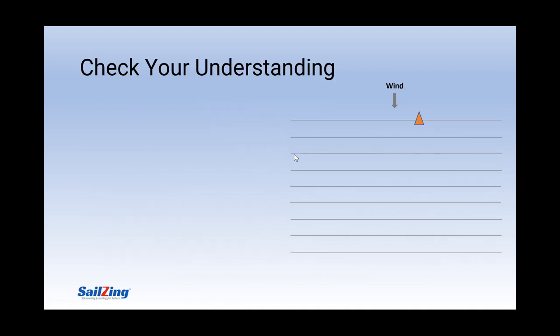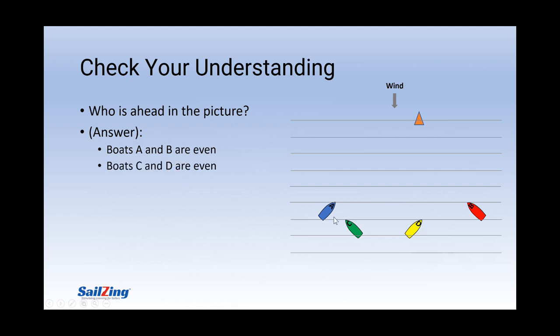Now let's check your understanding. Who's ahead in this picture? Using the ladder rungs, we can easily see that boats A and B are even with each other, since they are on the same ladder rung. C and D are also even with each other, and A and B are ahead of C and D.